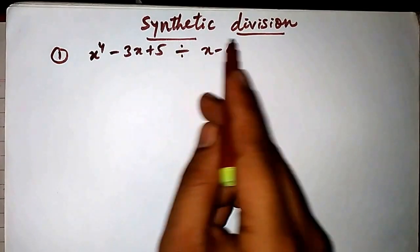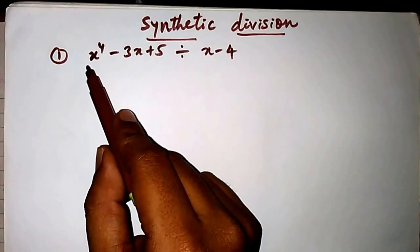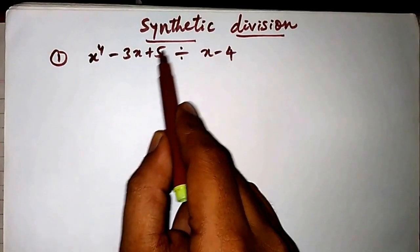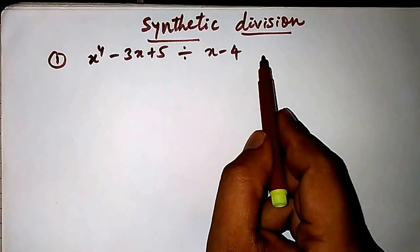Today we are going to see synthetic division. The question here is x raised to 4 minus 3x plus 5 divided by x minus 4.